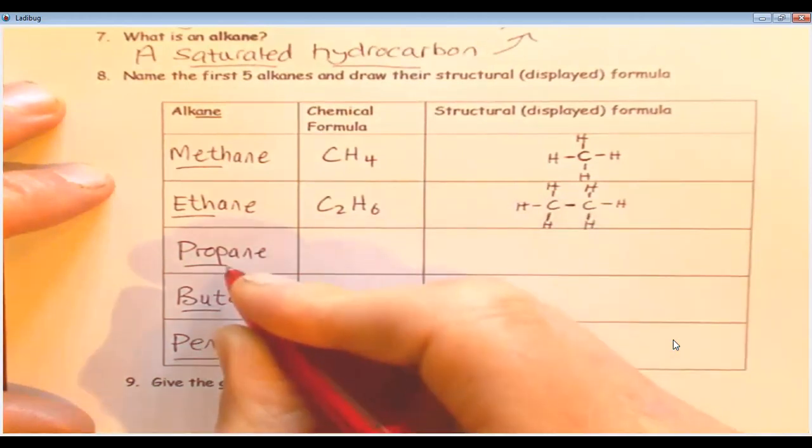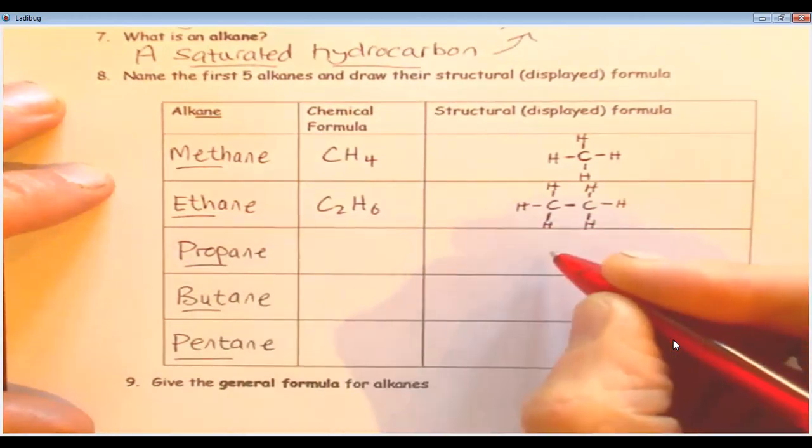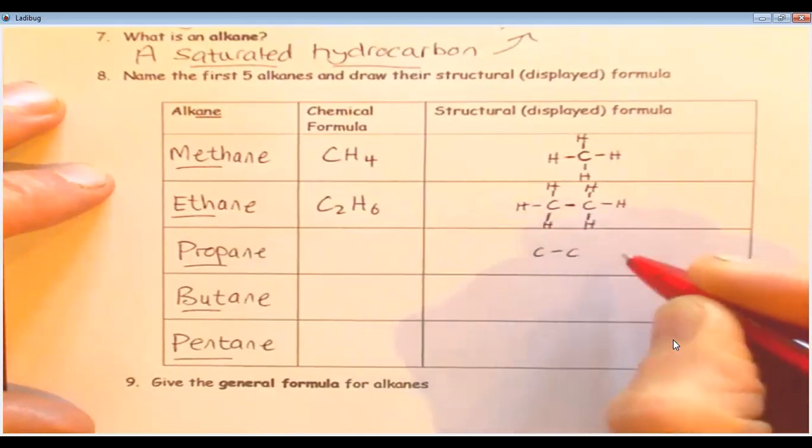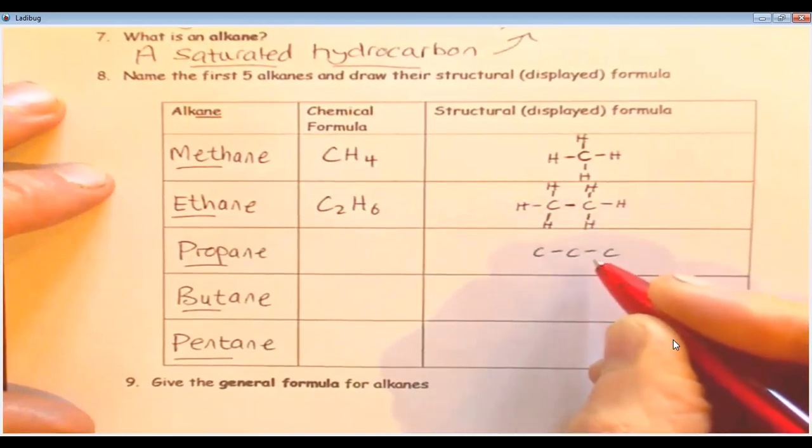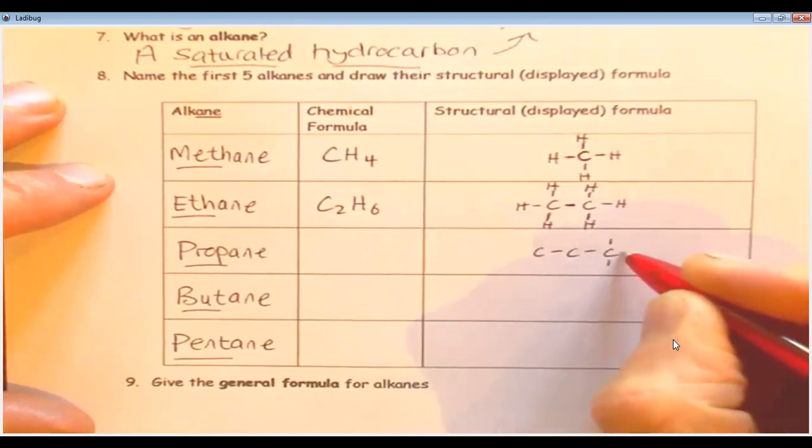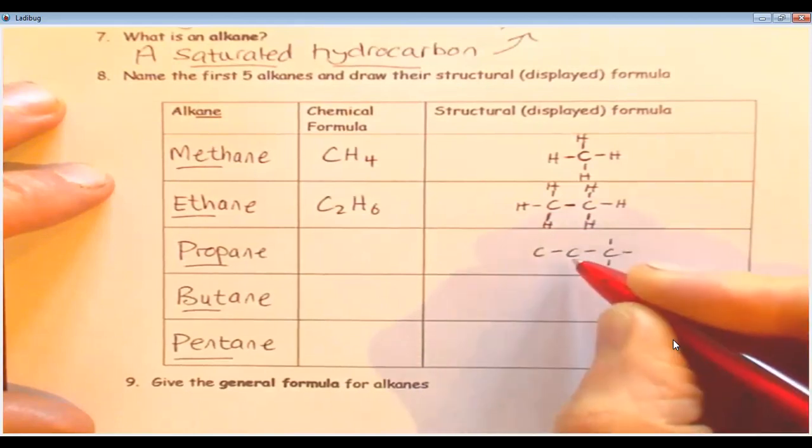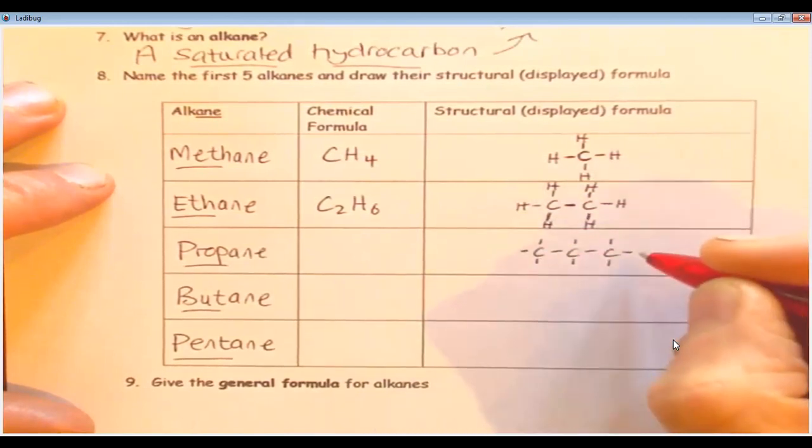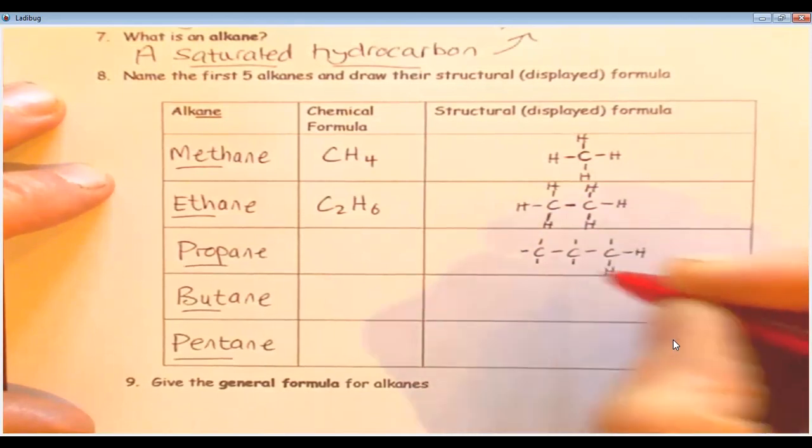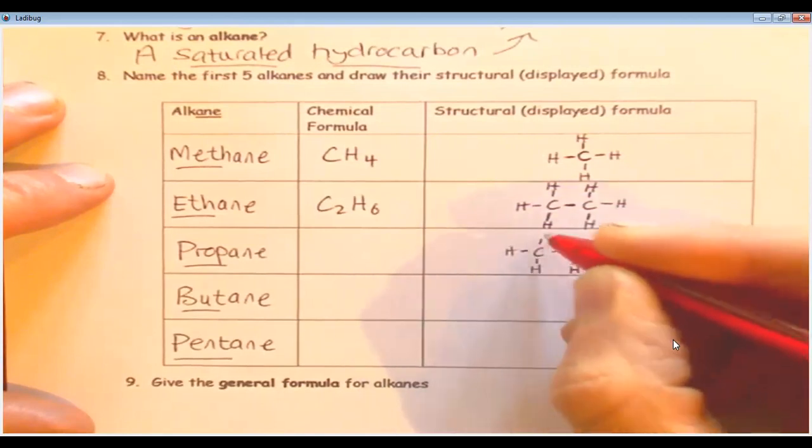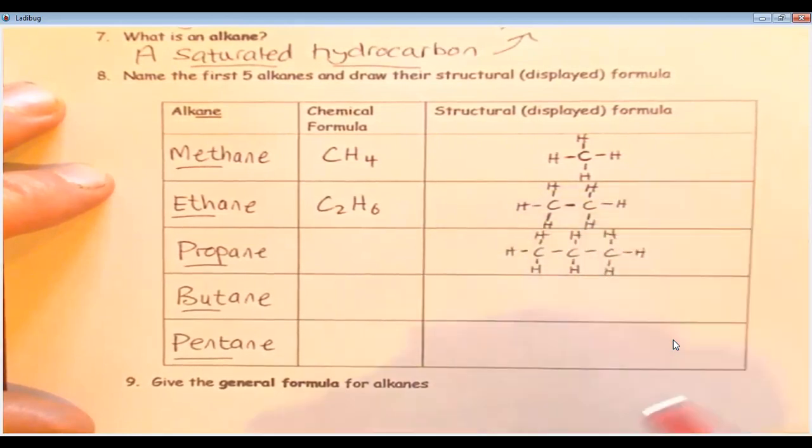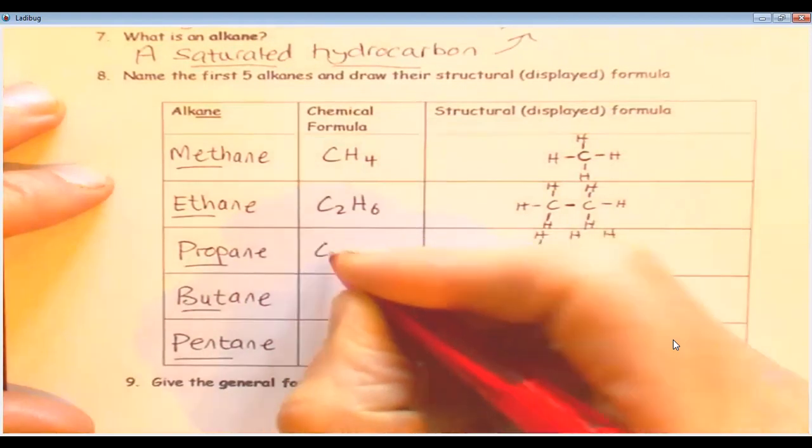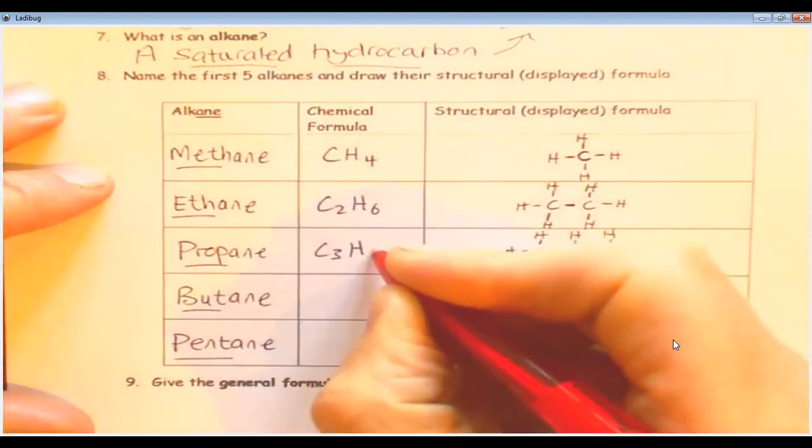Propane, the prefix prop, means three carbons. One, two, three. I've already put the single bonds in because it's an alkane. Every carbon makes four bonds. Careful on the middle one. It's already making two bonds. So it's got another two here. And then this one's got three bonds on the outside. And then we just pop the hydrogens on because it's a hydrocarbon. And then count the carbons, C3. Count the hydrogens, H8.